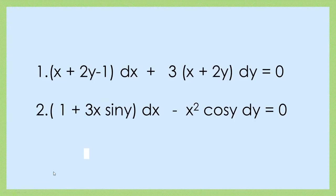To illustrate the substitution method, we have two differential equations. The first one is: (x + 2y − 1)dx + 3(x + 2y)dy = 0. If you start checking from the top down — is this separable? It's not separable. Is this homogeneous? It's not homogeneous because of that constant term. Is it exact? It's never exact. If you try to convert it to a linear or Bernoulli equation, it cannot be done for this particular DE.